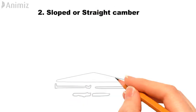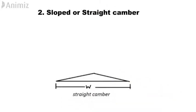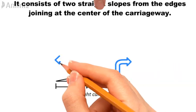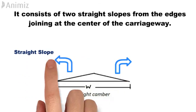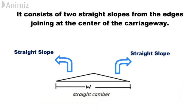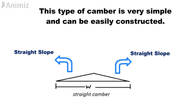Two: Sloped or straight camber. It consists of two straight slopes from the edges joining at the center of the carriageway. This type of camber is very simple and can be easily constructed.